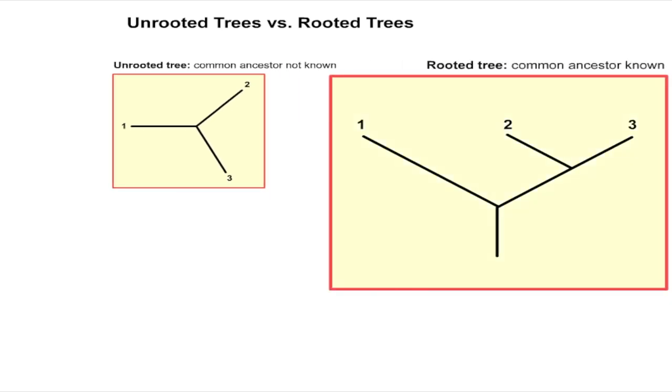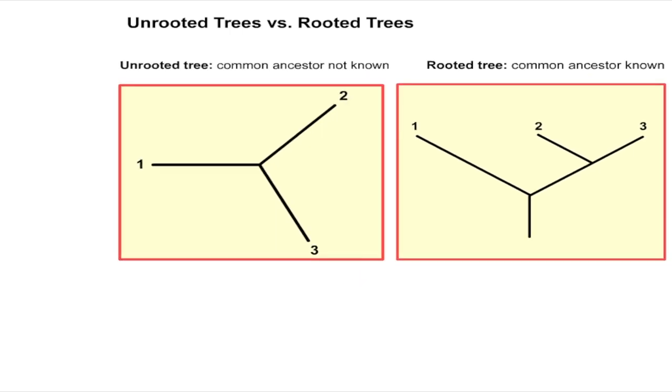A rooted tree, by contrast, is a directed tree that has a unique root node that represents the most recent common ancestor of all the other nodes on the tree.